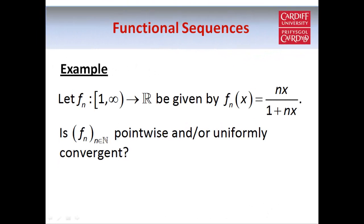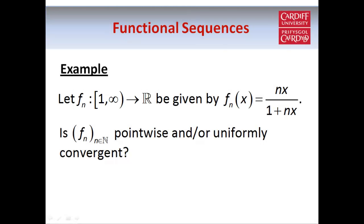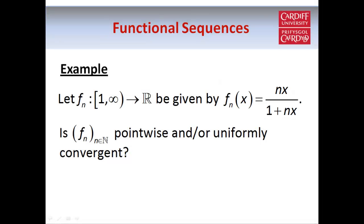Suppose we have a new functional sequence. As in all examples, it's important to pay attention to the domain on which the functions are defined. The domain in this example is the set of real numbers from 1 to infinity, including 1. The functions in the sequence are given by fn(x) = nx/(1 + nx) for all x in the domain and natural numbers n. We want to decide whether this sequence is pointwise convergent and whether it's uniformly convergent.